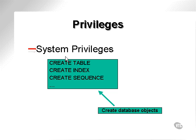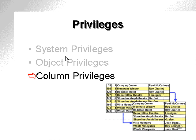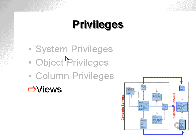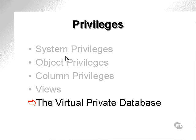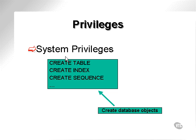This leads us to privileges. There are a number of layers of privileges. These are system privileges, object privileges, and column privileges, amongst others. We will go through those levels of privilege allocation in detail.